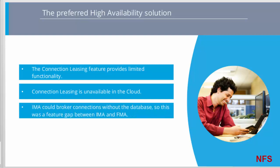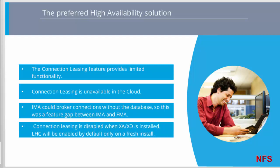The introduction of LHC closes one of the major feature gaps between IMA-based XenApp and FMA-based XenApp XenDesktop. Beginning with the 7.12 release, connection leasing is disabled by default. However, if you upgrade to XenApp and XenDesktop 7.12 from a site where connection leasing is enabled, the upgraded site will still have connection leasing enabled and local host cache will be disabled. Local host cache will be enabled only after a fresh install of XenApp and XenDesktop 7.12 or an upgrade from a site where connection leasing is disabled.